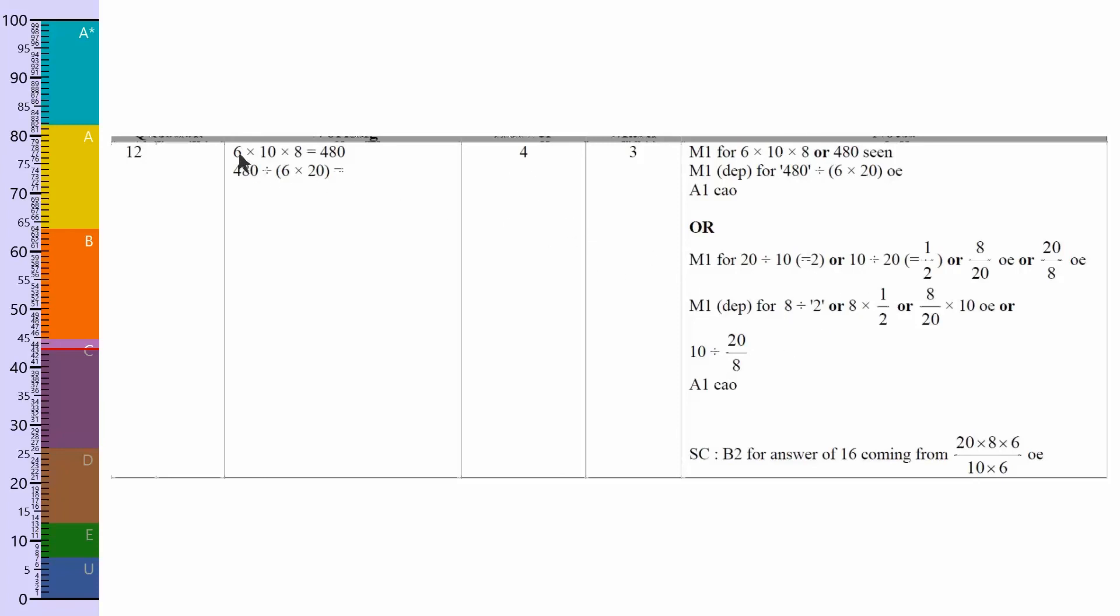This is where they've worked out the volume of the orange juice, and then done the 480 divided by the 6 times the 20, which would also give you the answer of 4. However, I think my method's probably a little bit easier.